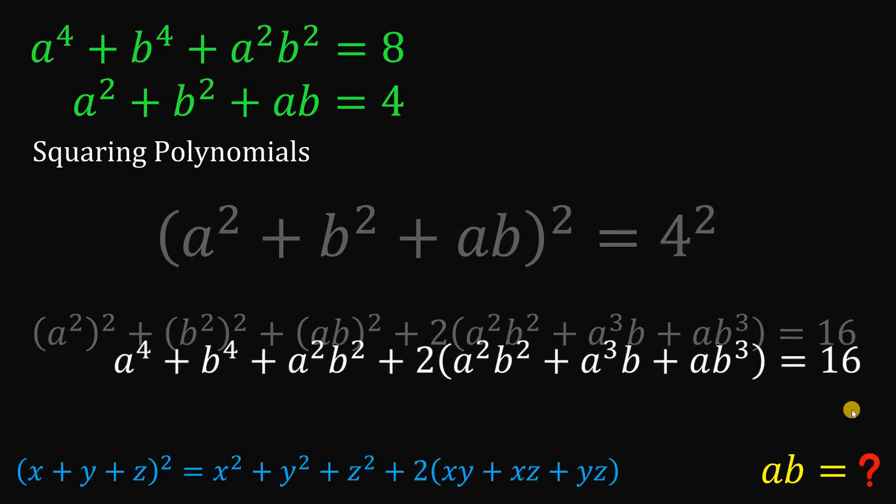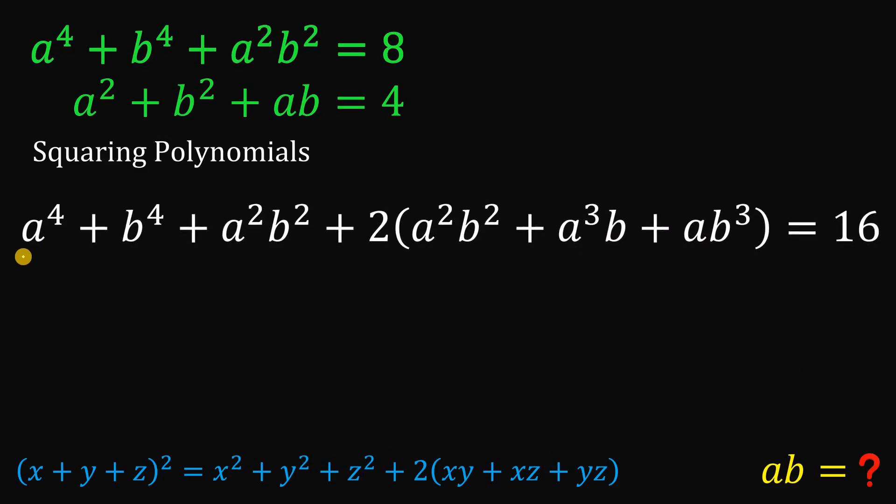Now, let's focus on this result. Because this expression, a raised to the fourth power plus b raised to the fourth power plus a squared b squared is technically our given first equation. And we know the value of this. This is just 8. So we can replace this with 8.